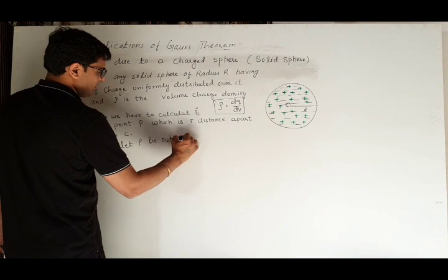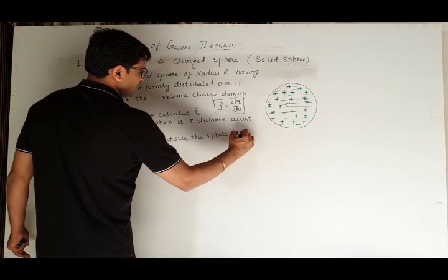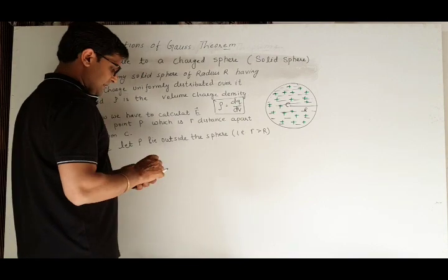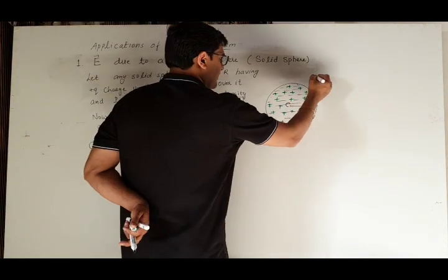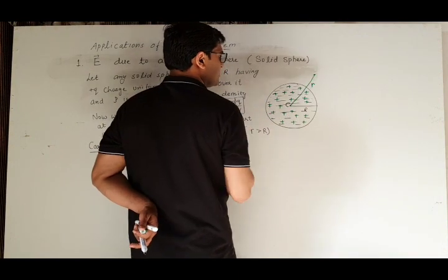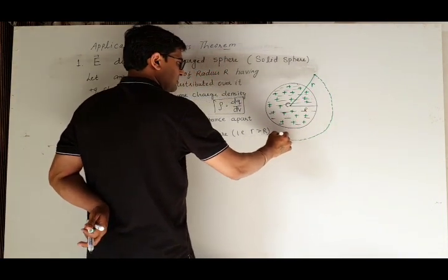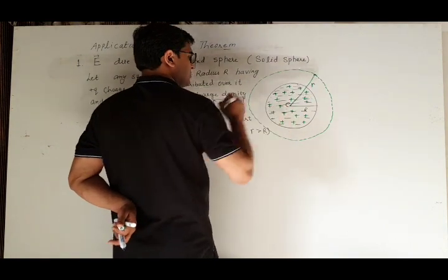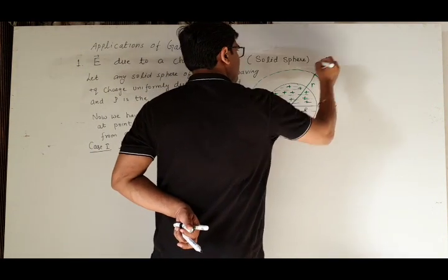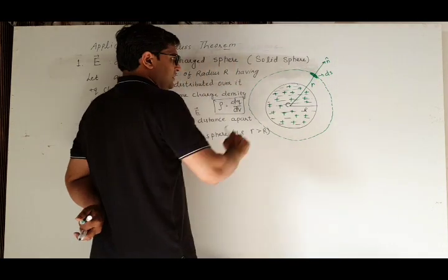Case 1: let P lie outside the sphere, that is r is greater than R. In this case, we take a point P at distance r from the center. We draw a Gaussian surface through this point, where the outward normal and surface element ds are defined. This is our Gaussian surface.